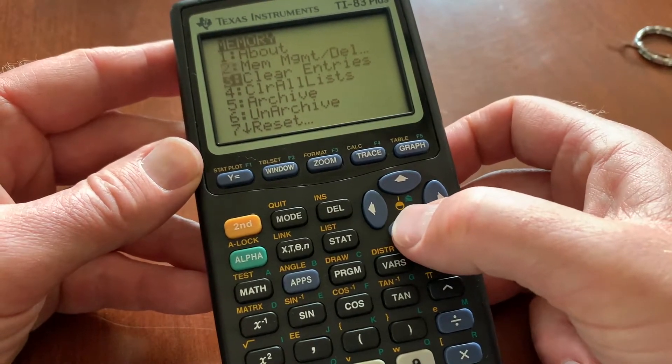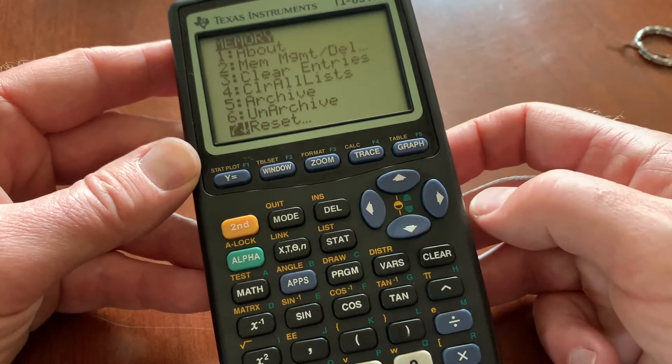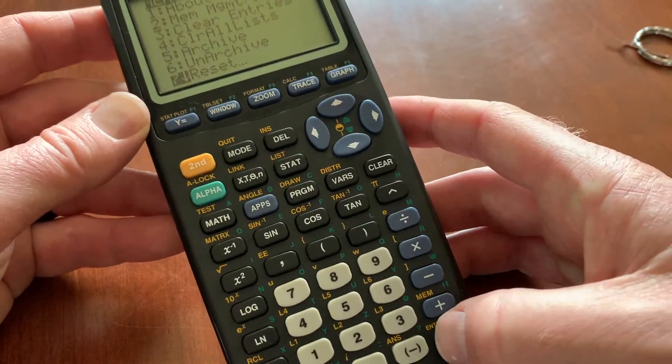Now I'm going to use the down arrow. I'm going to scroll all the way down to number seven, which is reset. And then we're going to hit enter down here.